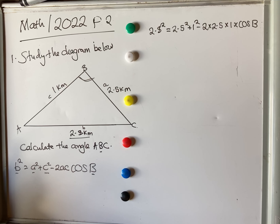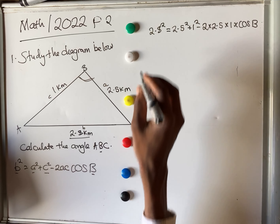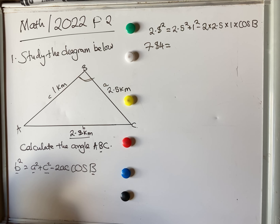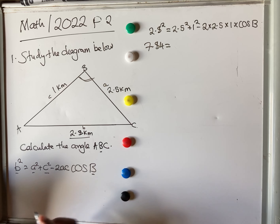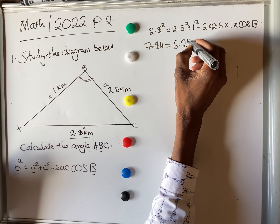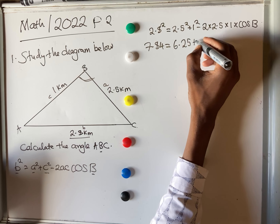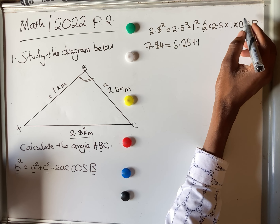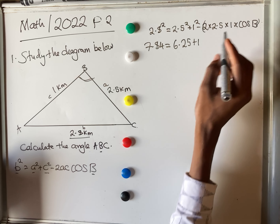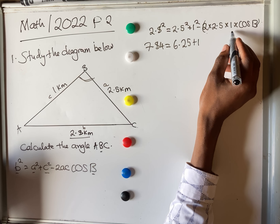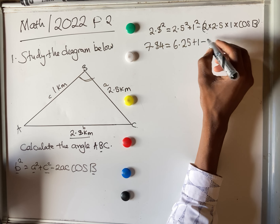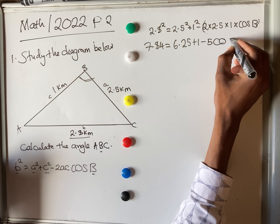So 2.8 squared gives us 7.84. On the right side, 2.5 squared gives 6.25, and 1 squared gives 1. You can simplify at the same time: 2 times a (2.5) times c (1) gives us 5. So we have 7.84 = 6.25 + 1 − 5·cos B.